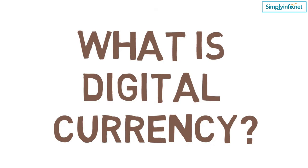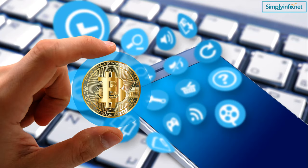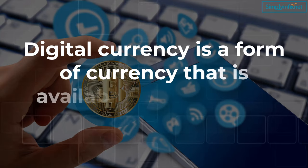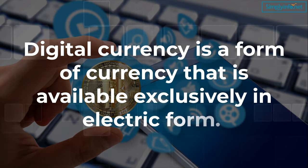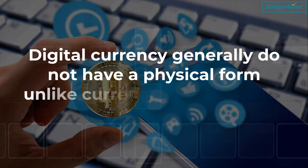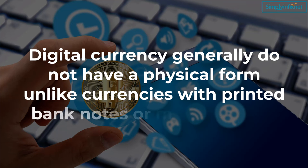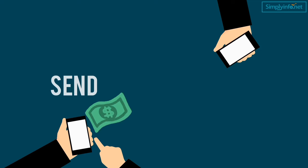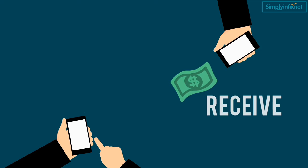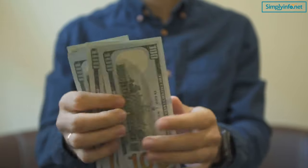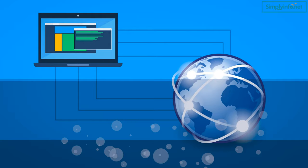What is digital currency? Digital currency is a form of currency that is available exclusively in electronic form. Digital currency generally does not have a physical form, unlike currencies with printed banknotes or minted coins. The lack of physical form allows nearly instantaneous transactions over the internet and removes the cost associated with distributing notes and coins. It is accounted for and transferred using electronic codes in computers.